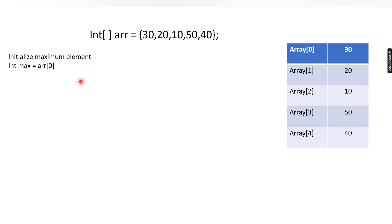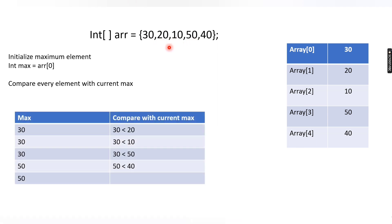This is just a random assignment to the max variable — whatever is the first element, we assign it to max. After that, we compare that max value with the other array values. Our current max is 30. We compare it with the next element, 20: is 30 less than 20? No — so the current max remains 30.